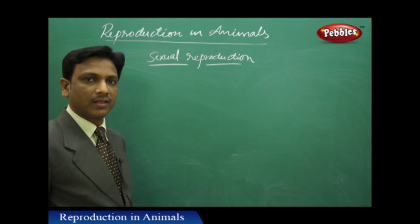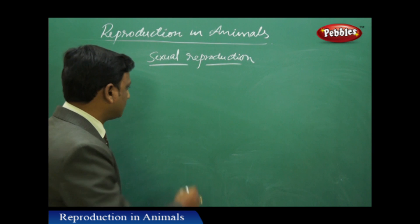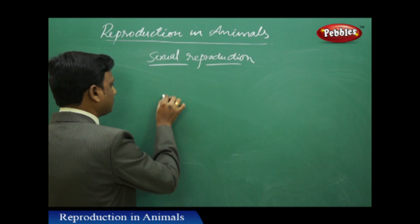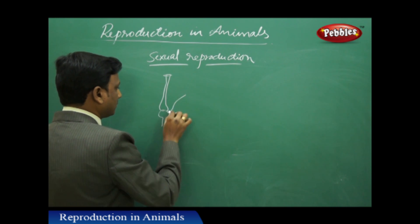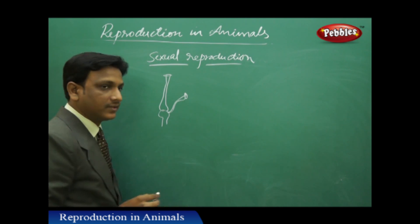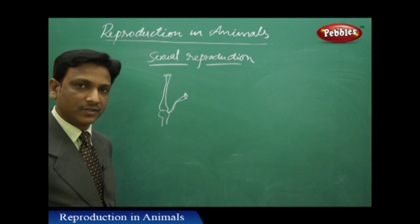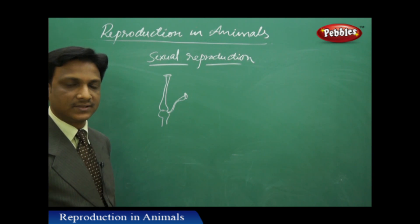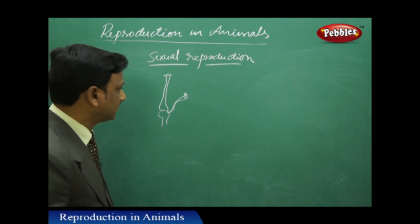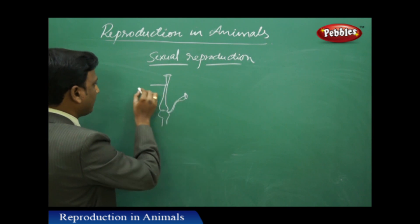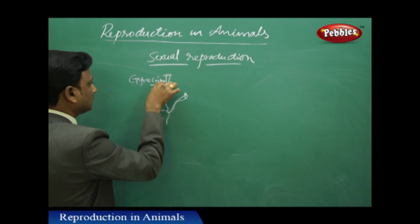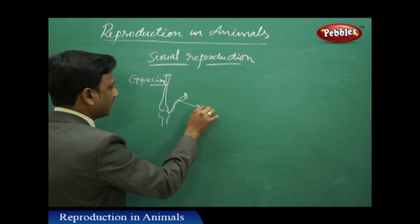Let us recall the process of sexual reproduction in plants. In plants, there are different reproductive parts — male and female reproductive parts. Sometimes both male and female parts are found in the same plant, the same flower. In some cases, the flower may have either male or female reproductive organs. The female reproductive organ is the gynoecium and the male reproductive organ is called the androecium.